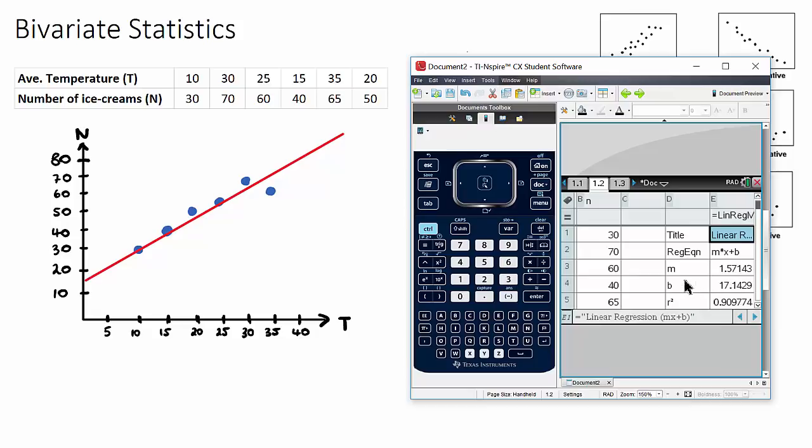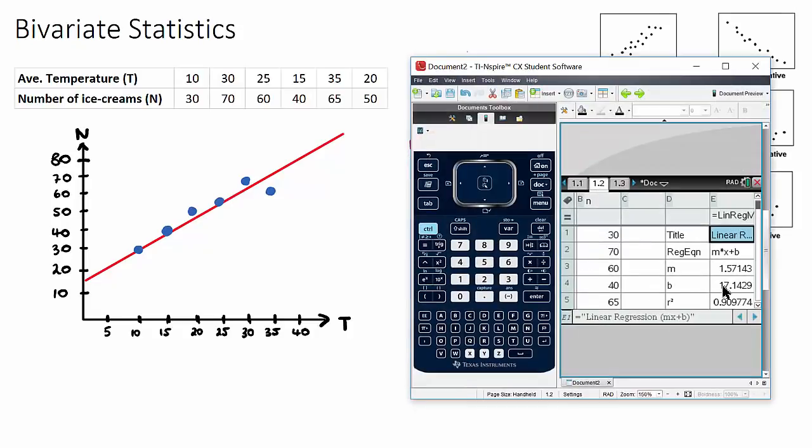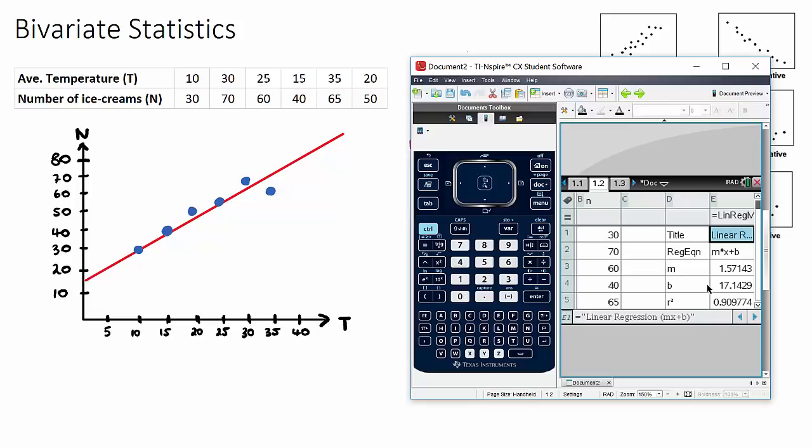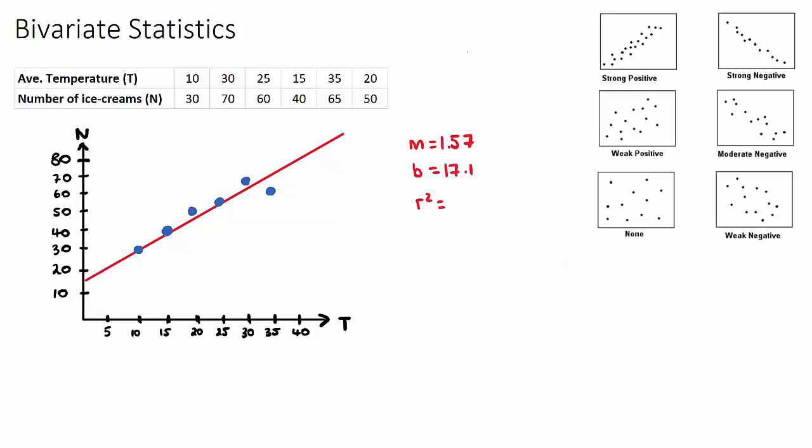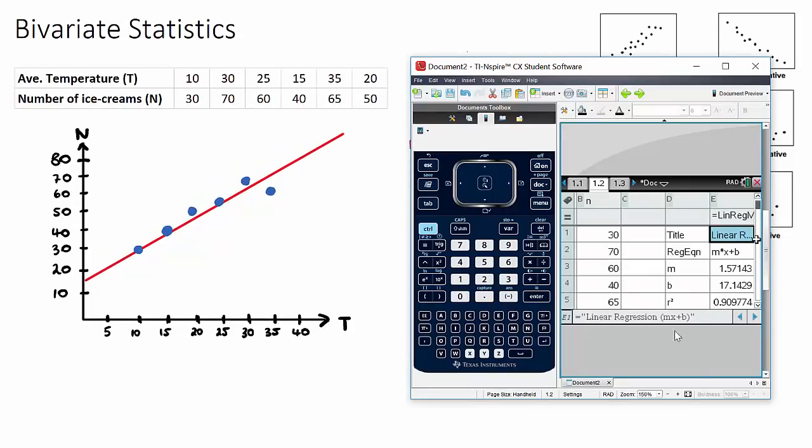So I'll put all of this in. m equals 1.57, our b value was 17.1, our r squared is 0.909, and our r value is 0.95.